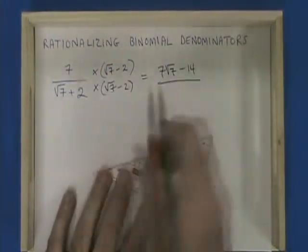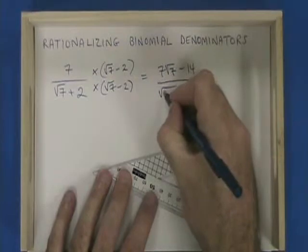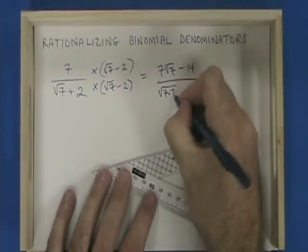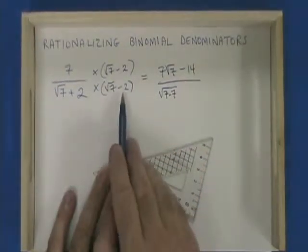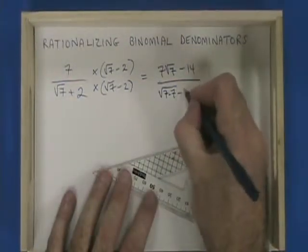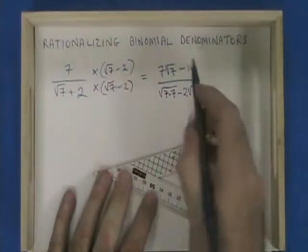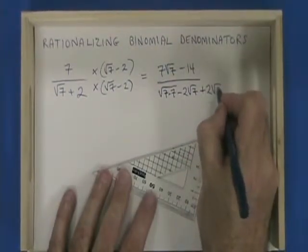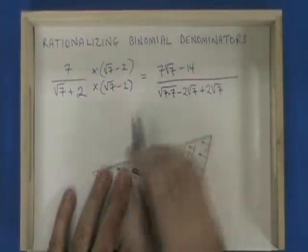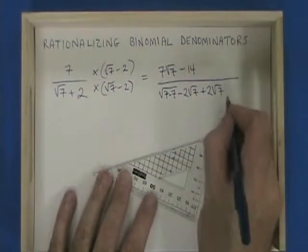In the bottom, root 7 times root 7, I'll write it as root 7 times 7. The outside, root 7 times negative 2 is minus 2 root 7. The inside, 2 times root 7 is plus 2 root 7. And finally, 2 times negative 2 is minus 4.